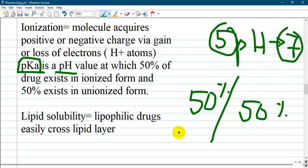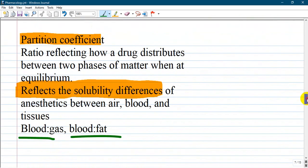Lipid solubility - lipophilic drugs easily cross lipid membranes. Partition coefficient is a ratio reflecting how a drug distributes between two phases of matter when at equilibrium. If you're an anesthesiologist, you understand well the partition ratio of blood gas.